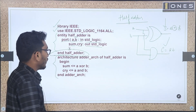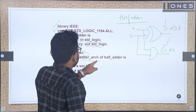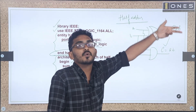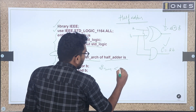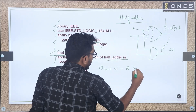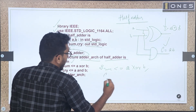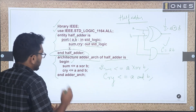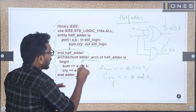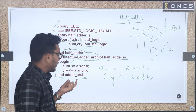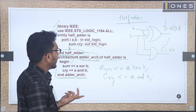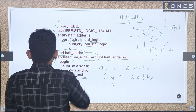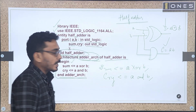Architecture part: architecture adder_architecture of half_adder is — begin. Sum <= A xor B; carry (CRY) <= A and B; end adder_architecture. The architecture name is 'adder_architecture'. This VHDL program is 8 marks: 4 marks for AND gate and 4 marks for half adder. Within each, it is split as 2 marks for entity definition and 2 marks for architecture definition.